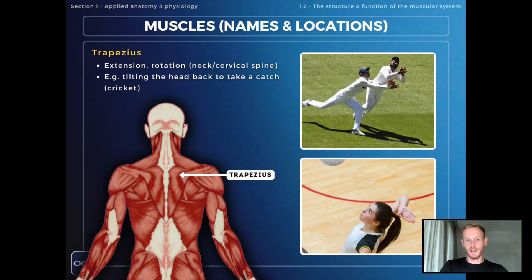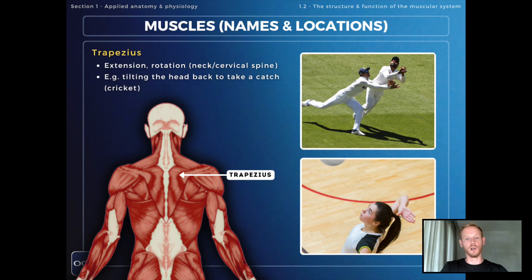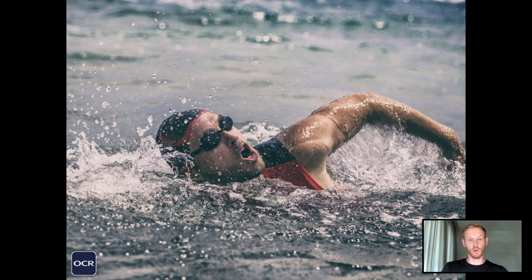The trapezius muscle is the triangular shaped muscle at the top of the back, and this one connects to the back of the cranium or skull. When it contracts it pulls the head backwards or creates extension in the neck — for example when tilting the head back to take a catch in cricket or looking up at the ball when spiking in volleyball. It also creates rotation in the neck, so a good example of that would be turning the head to breathe when swimming.